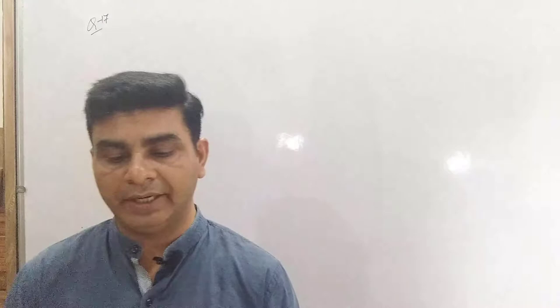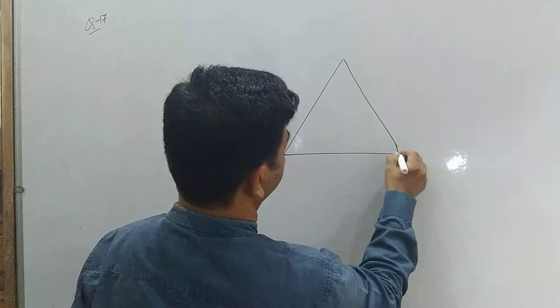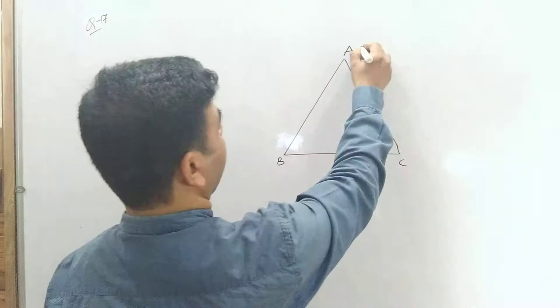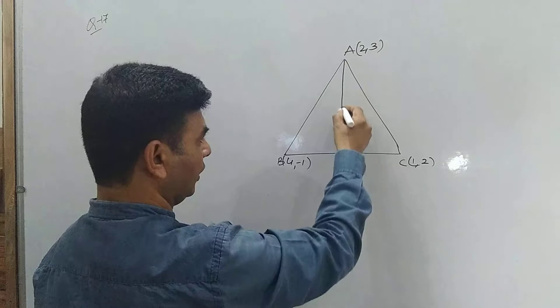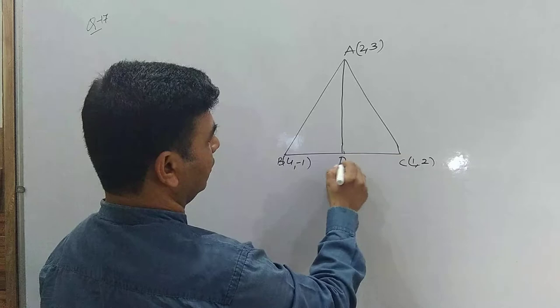Let us continue with exercise 10.3 question number 17. In triangle ABC with vertices given as (2,3), (4,-1) and (1,2), we need to find the equation and the length of the altitude from vertex A. This is the given triangle ABC with vertex A, B and C at those coordinates. We need to find the altitude drawn from vertex A, which intersects BC at point D.